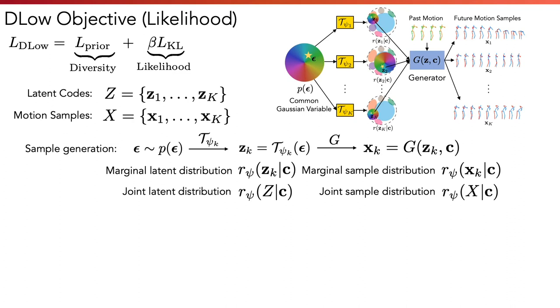The diversity term alone can drive samples to very low likelihood regions, just to achieve more diversity. Thus, we need a likelihood term to pull the samples back to high likelihood regions. Our KL term does exactly this.